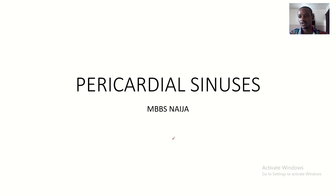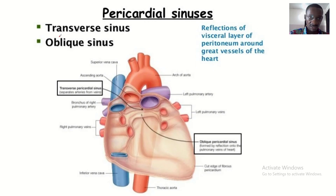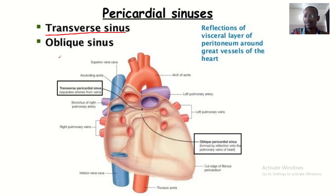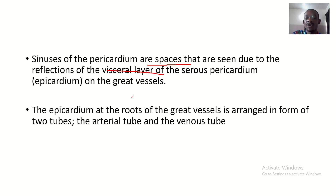So this is the anatomy of the pericardial sinuses. This is a diagram showing the pericardial sinuses. The sinuses of the pericardium are spaces that are seen due to the reflection of the visceral layer of the serous pericardium on the great vessels — the epicardium on the great vessels.